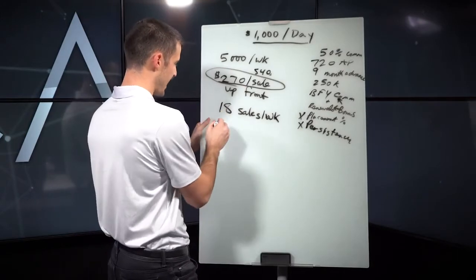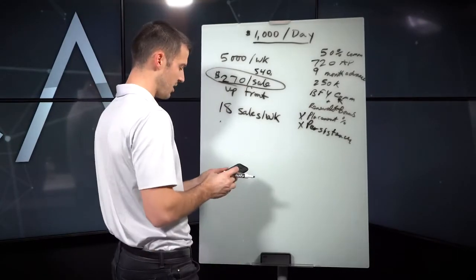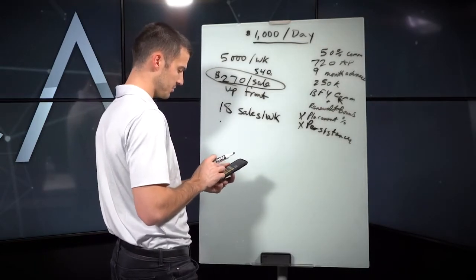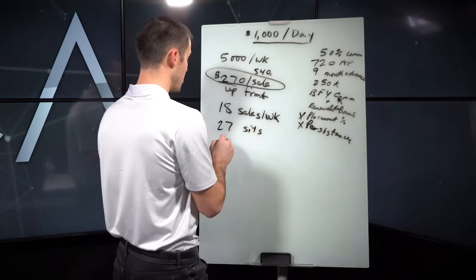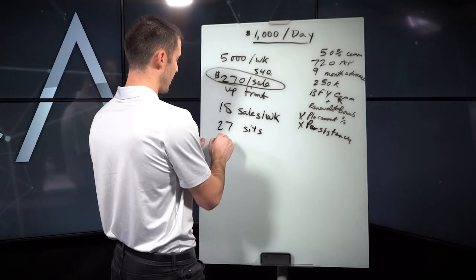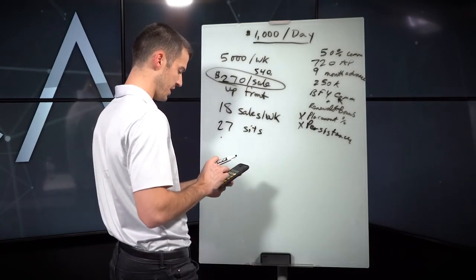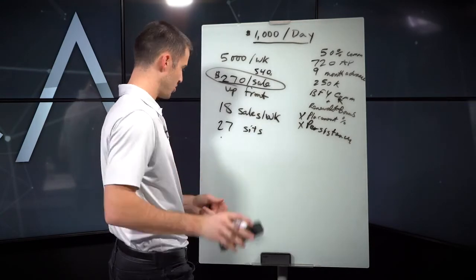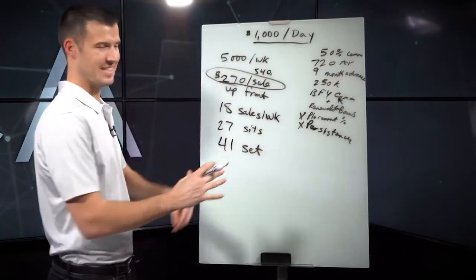At 270 bucks, for example, nine month advance and 50% commission, let's do this: 5,000 divided by 270. In this case, you would need 18 cells per week. Which is why this is a very rare, super conservative, awful example. However, in that case, maybe you would say, well, I sell about two thirds of the people that I sit with. So you need about 27 sits and you need to set about 41 set appointments in this example.